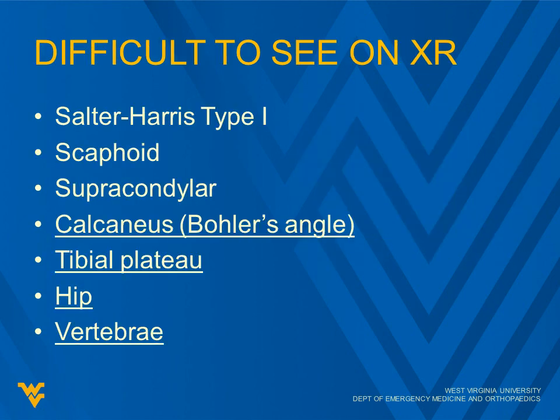These four at the end — the calcaneus, tibial plateau, hip, and vertebrae — we often use CT scan to investigate those better. The first three, we don't use CT as often in the emergency department.